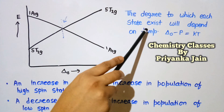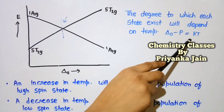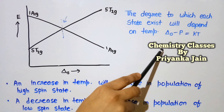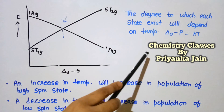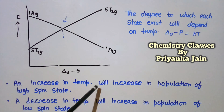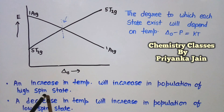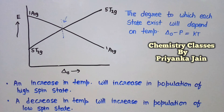At the crossover point, the energy difference between ⁵T2g and ¹A1g becomes negligible, enabling transition between spin states. The degree to which each state is populated depends on temperature: ΔE = kT. Increasing temperature increases the population of the high spin state and magnetic susceptibility, while decreasing temperature increases the low spin state population and lowers magnetic susceptibility.